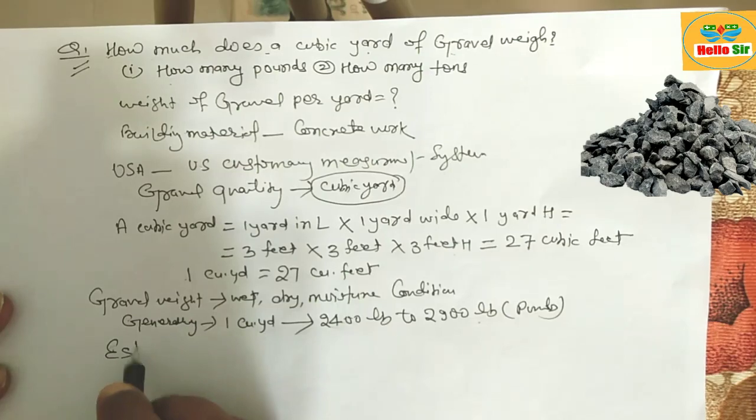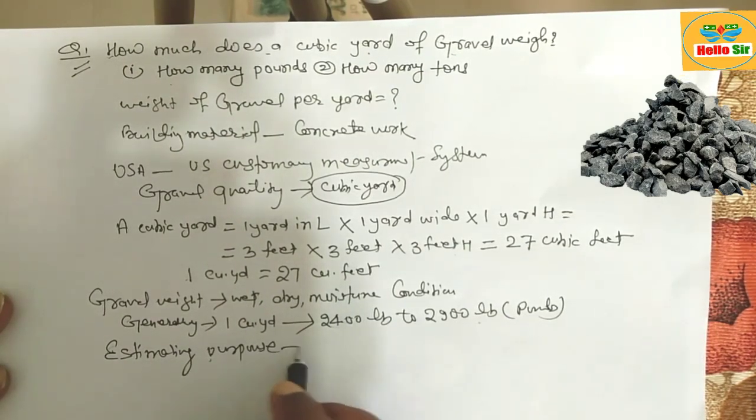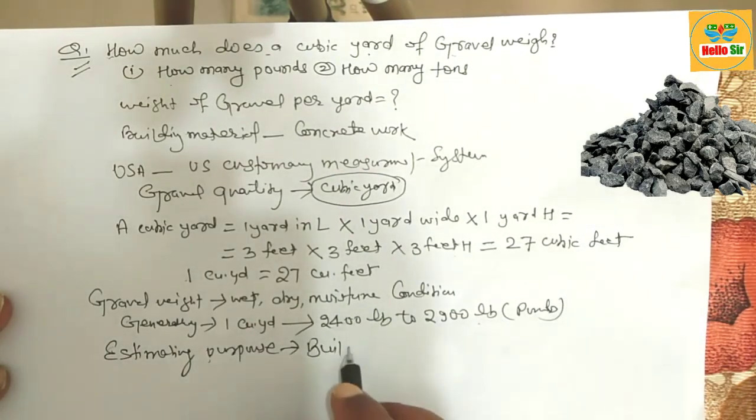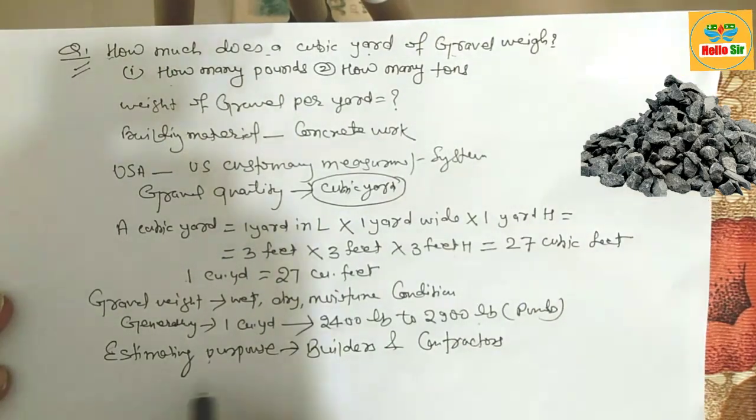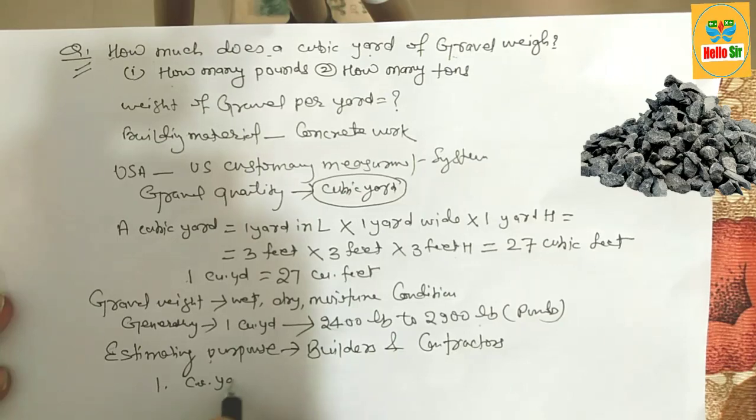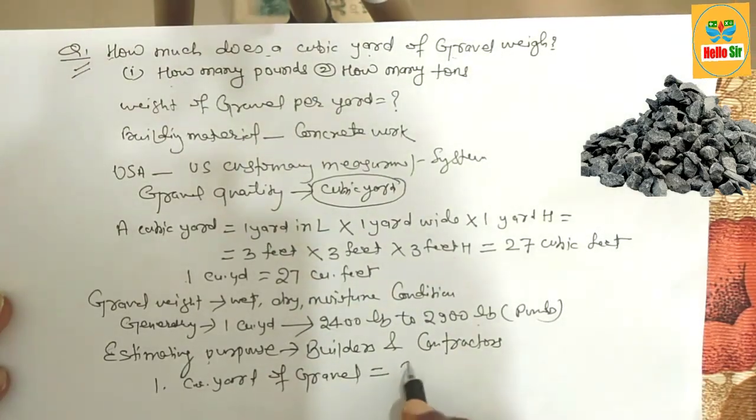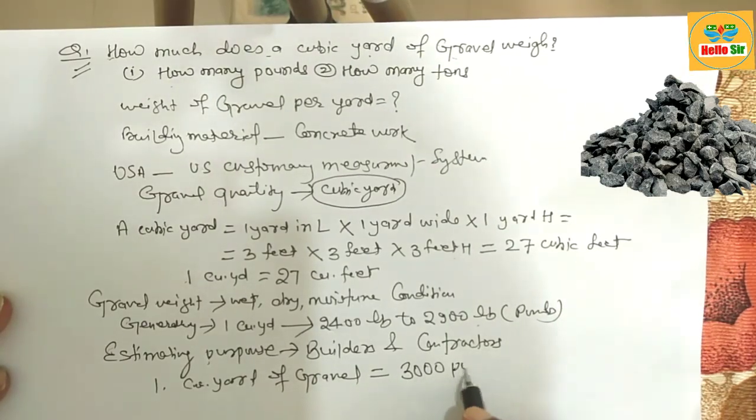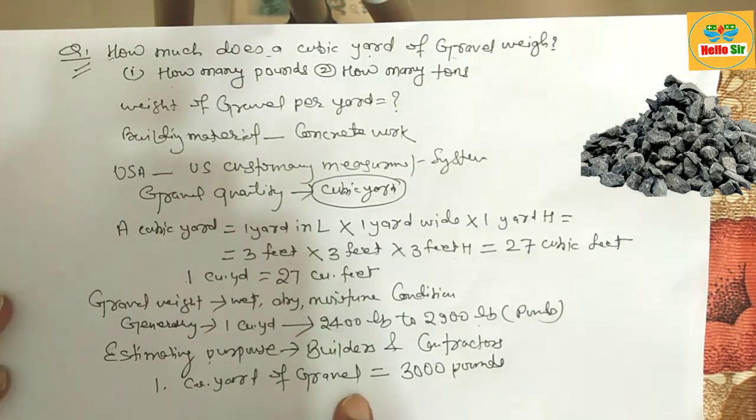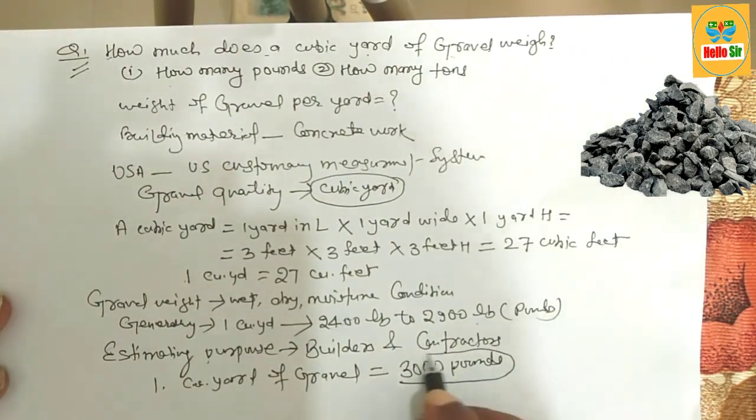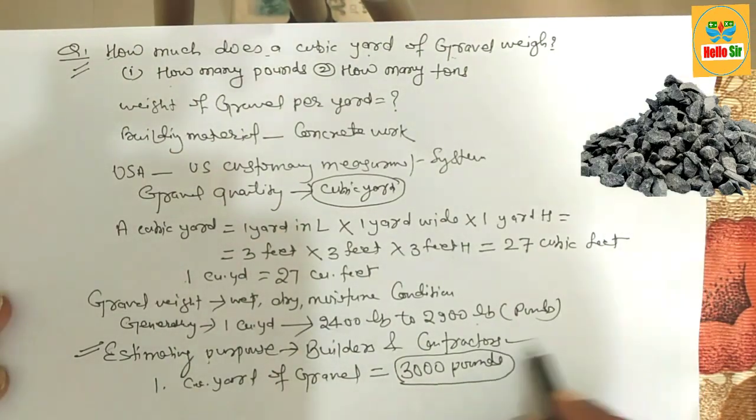For estimating purposes, builders and contractors take one cubic yard of gravel to equal 3,000 pounds. Remember, the weight of one cubic yard of gravel is 3,000 pounds for estimating purposes.